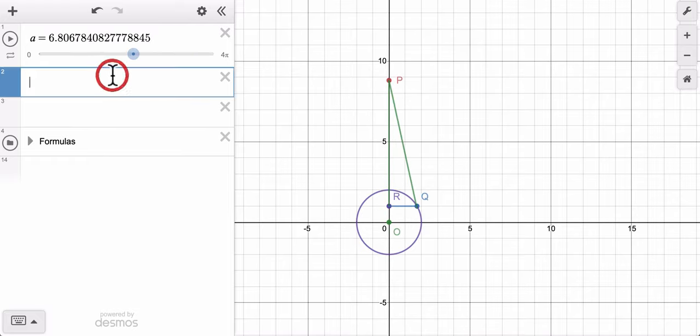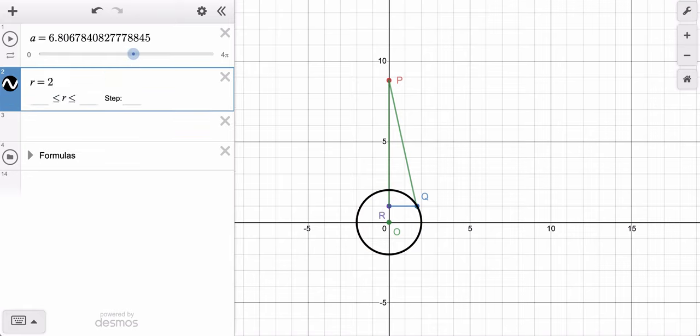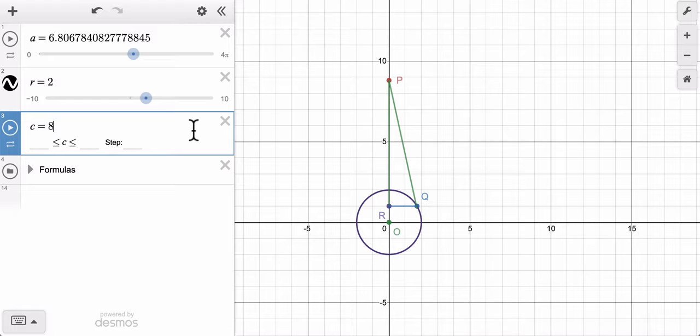Now I want to create two other variables. Let's have one be called R, and let's set R equal to 2. That'll be the radius of our circle. Now let's create another variable, C. In our case it's 8, and C will be the distance between P and Q.